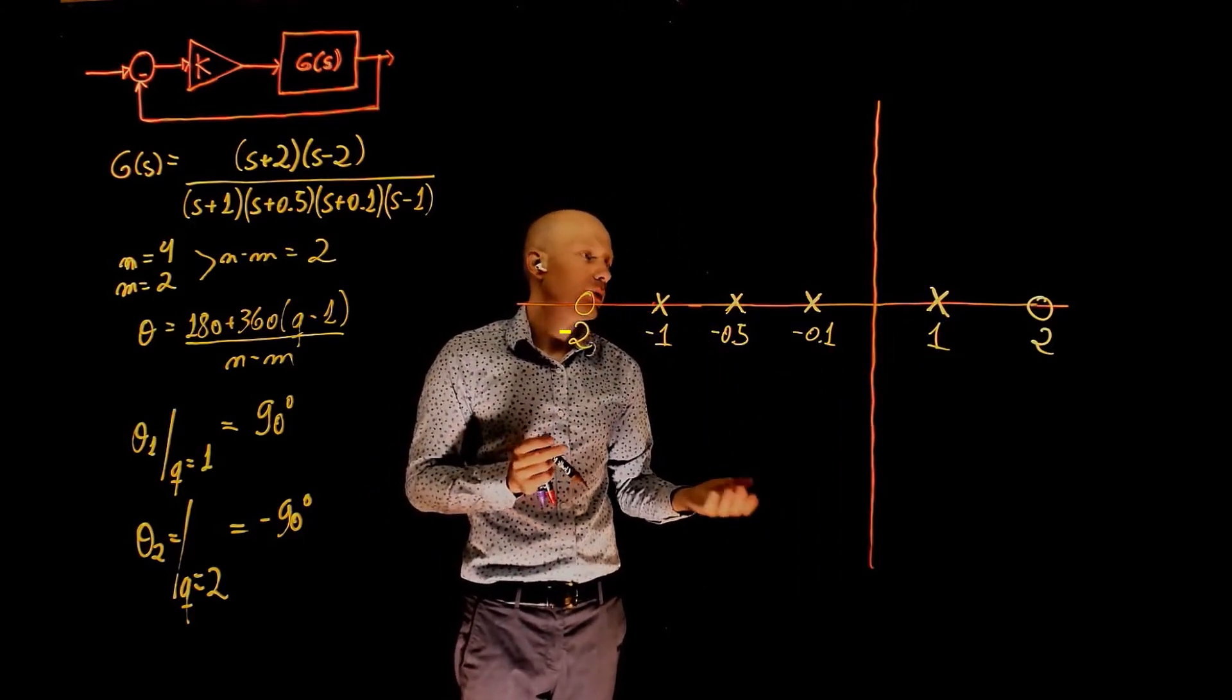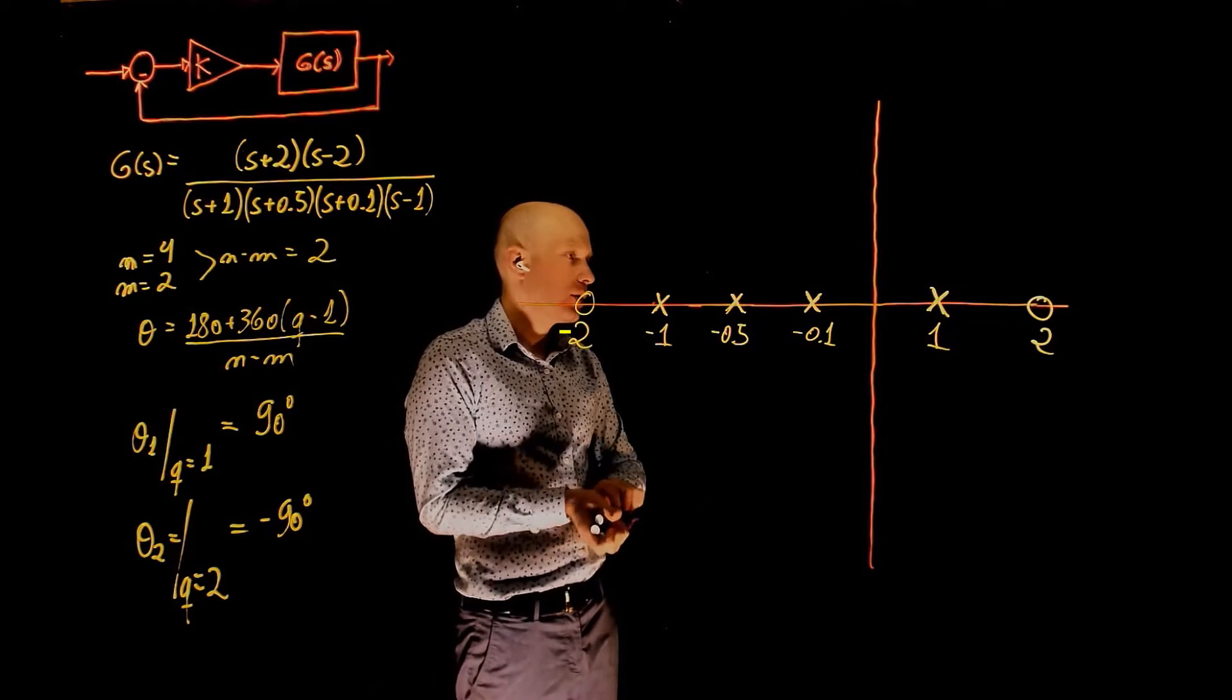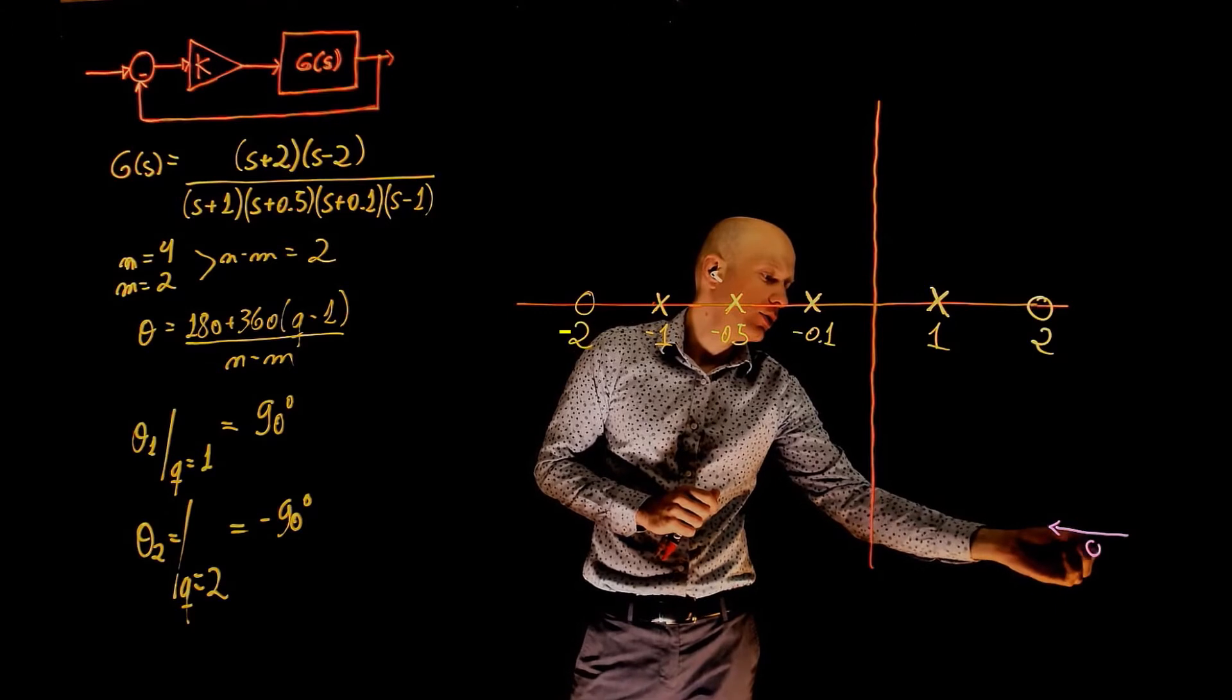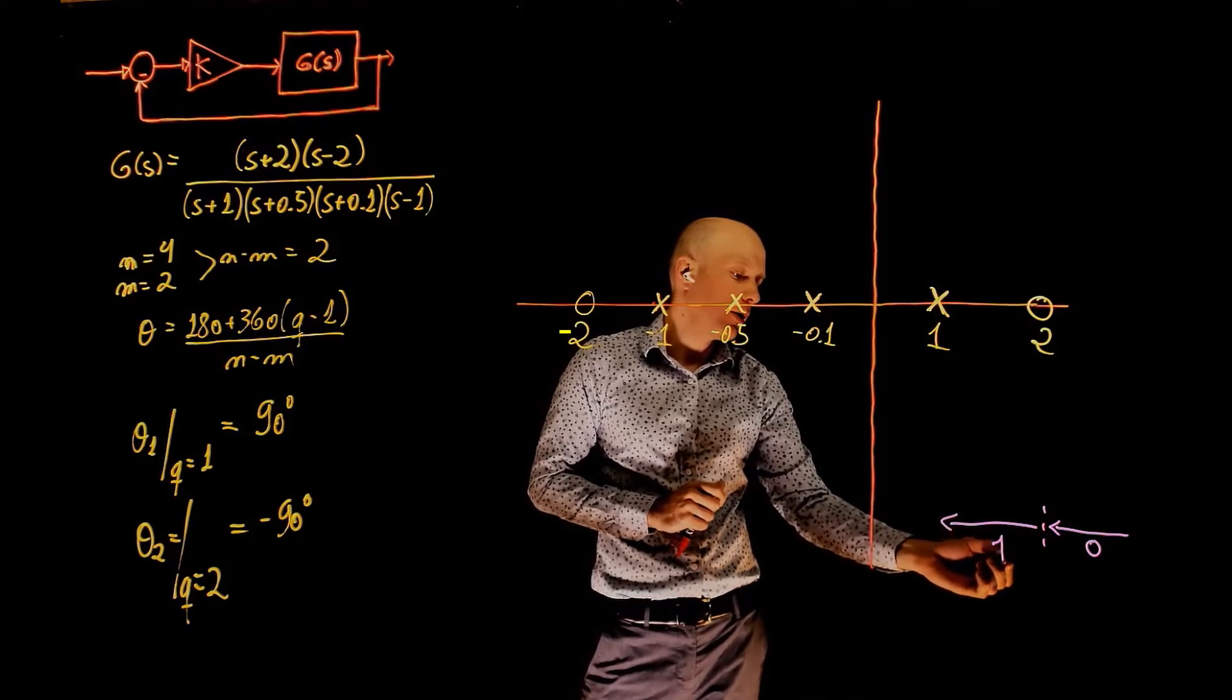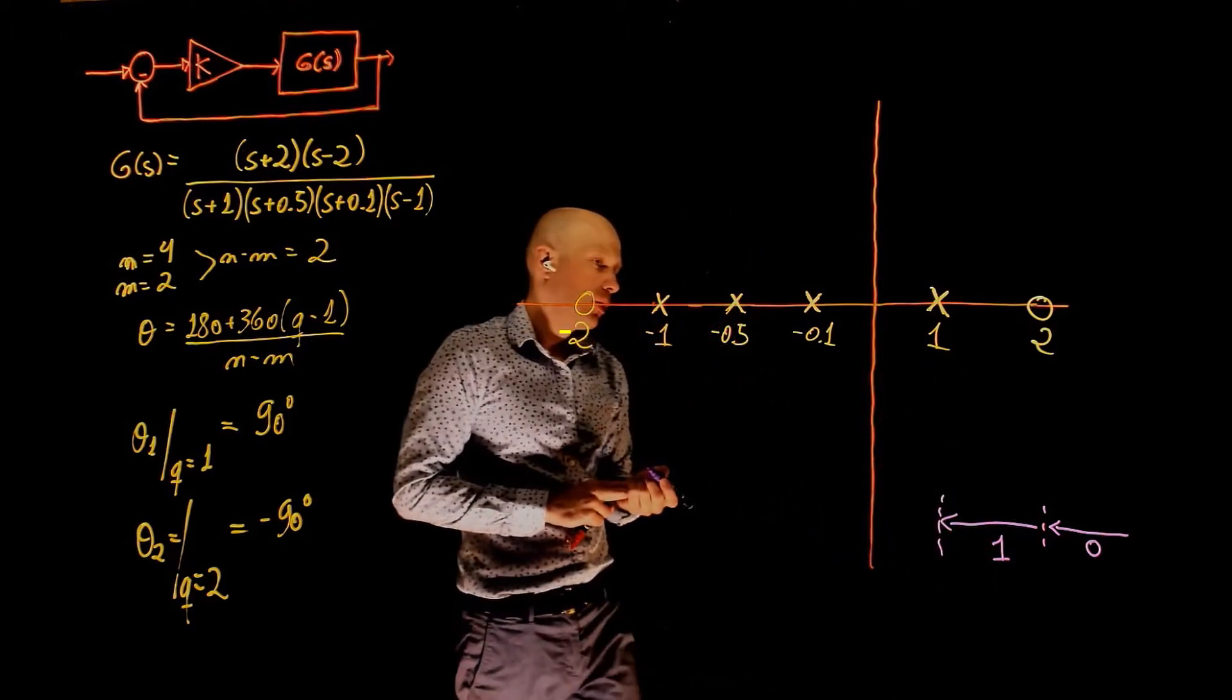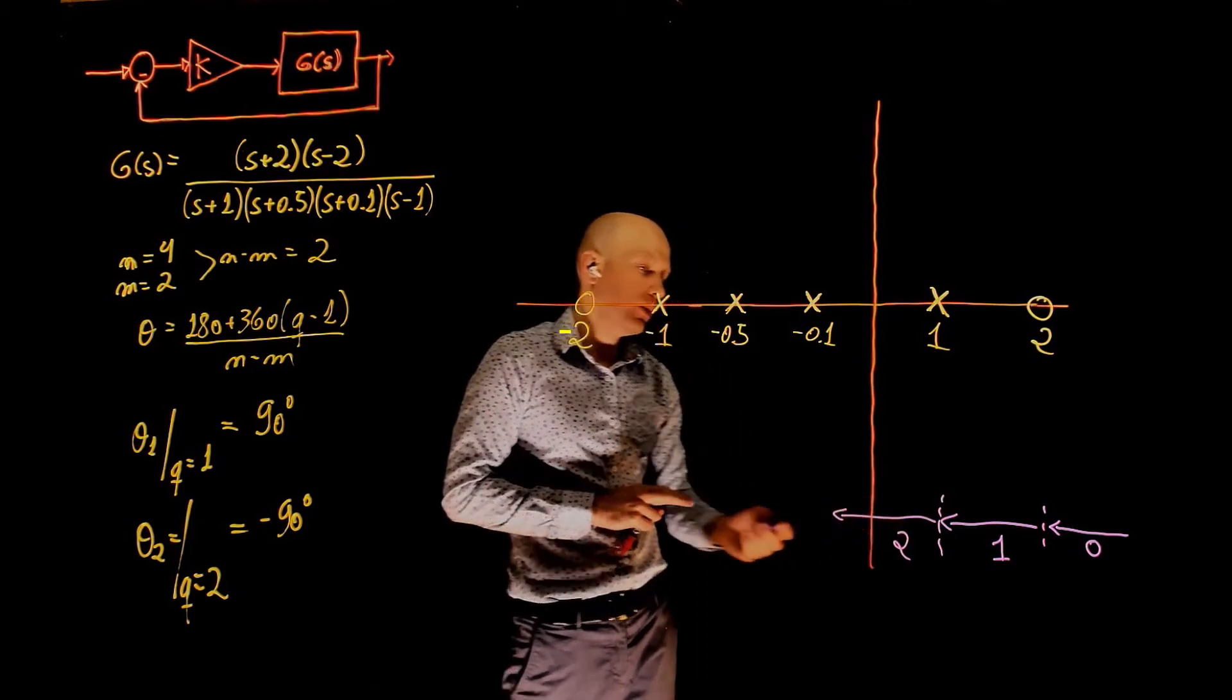Where is the root locus? Now the root locus is always to the left of an odd number of poles and zeros. Let's count them. Starting from positive infinity, we go from positive infinity up to 2, the count here is zero. When you encounter 2, the count becomes one and remains one up to this pole here. Passing the pole, now the count becomes two. We have passed two poles or zeros.